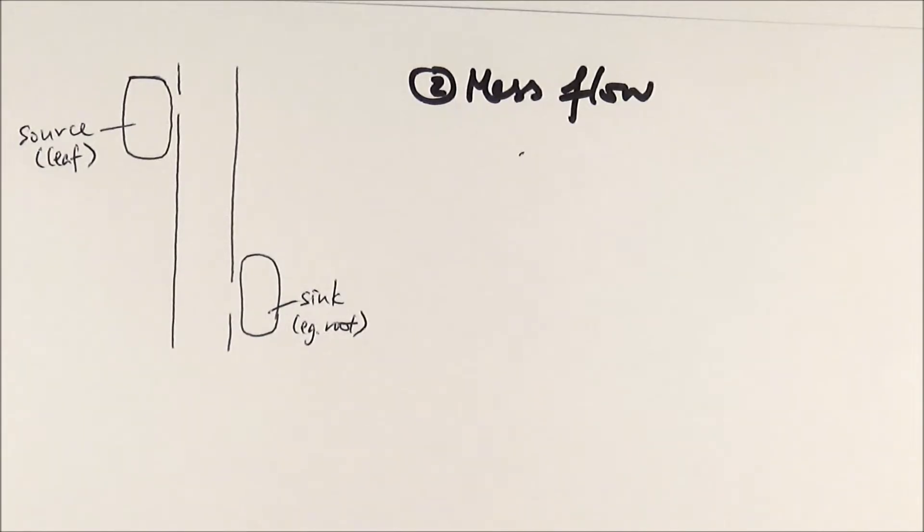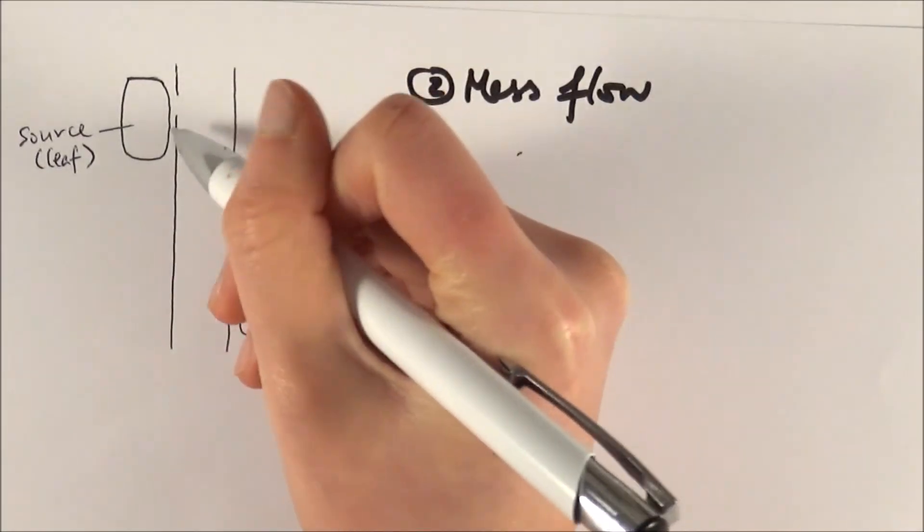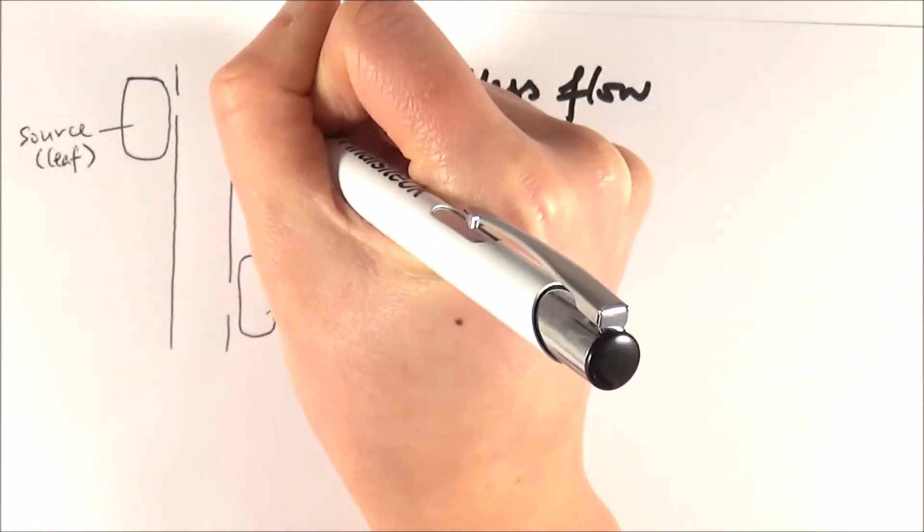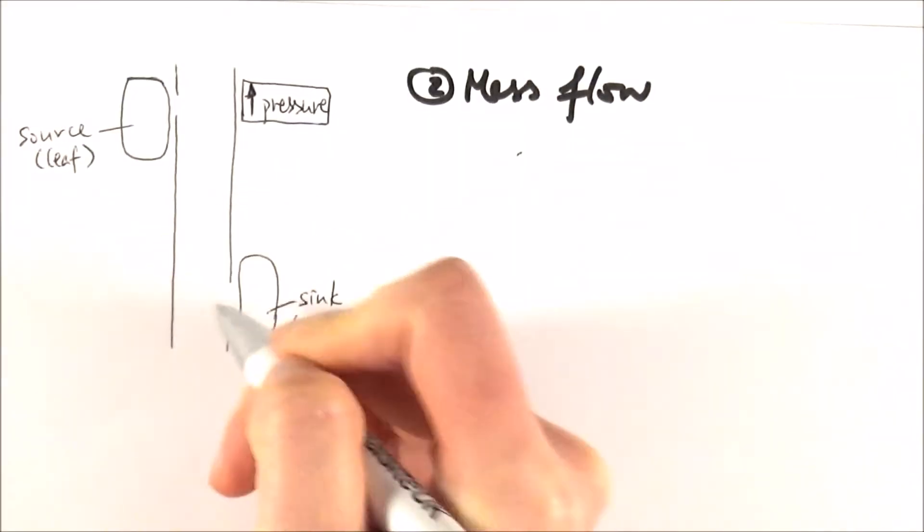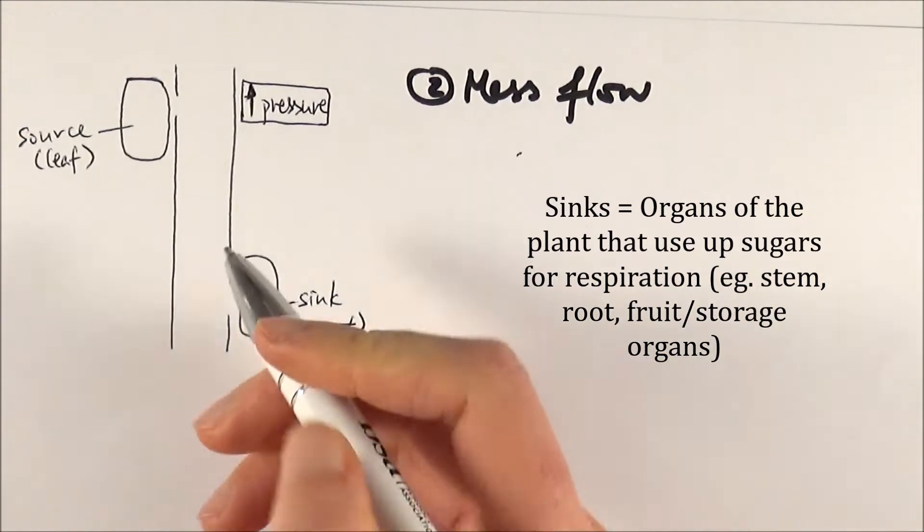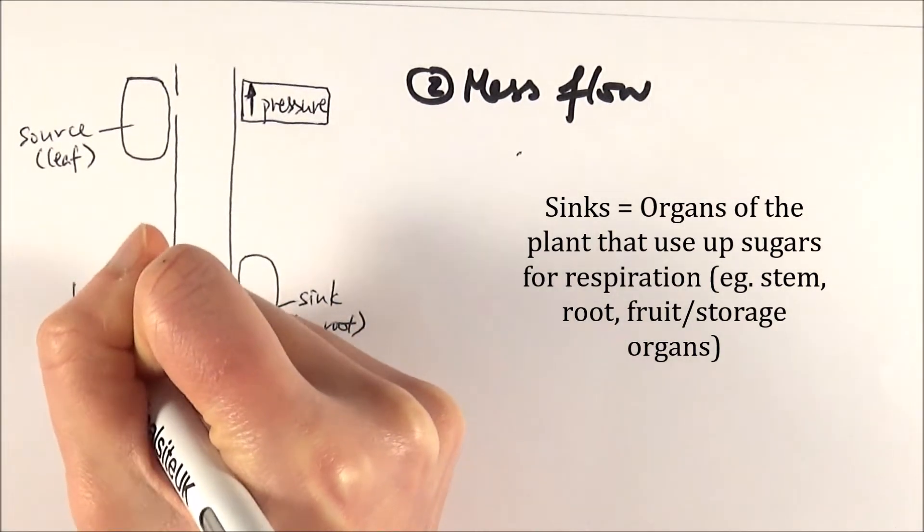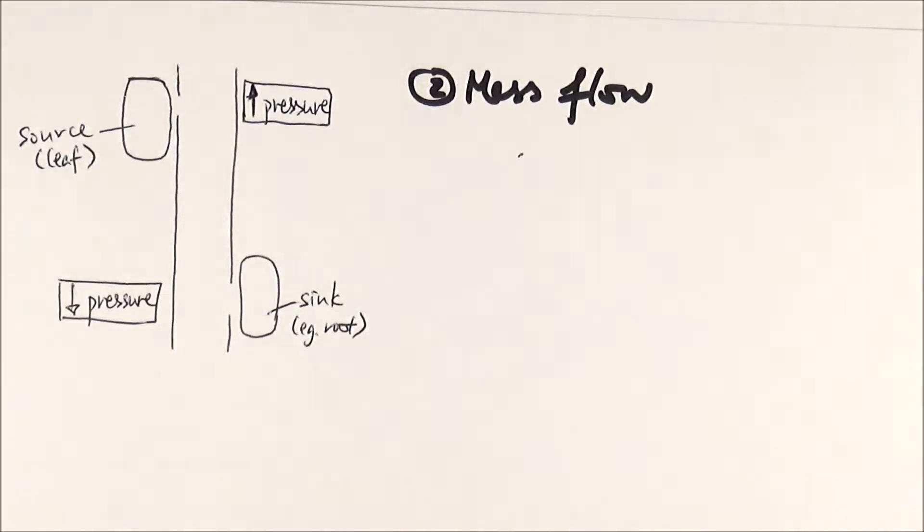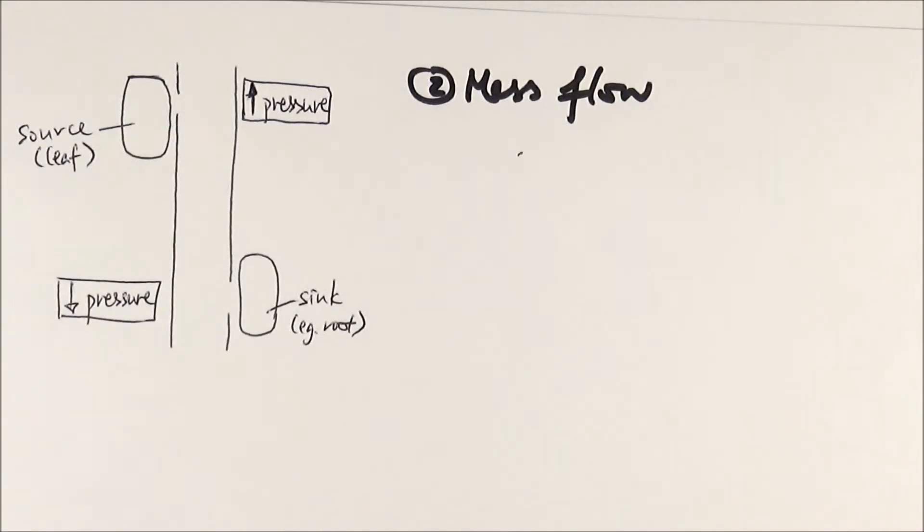As we mentioned before, there is a turgor pressure, so we say that here where the water moves has a high turgor pressure, and here at where the sinks are, the parts that actually use up the sugars, we say that they have a low pressure. Simply put, mass flow is literally talking about the assimilates flowing from the source with a high pressure to the sinks with a low pressure down the pressure gradient.